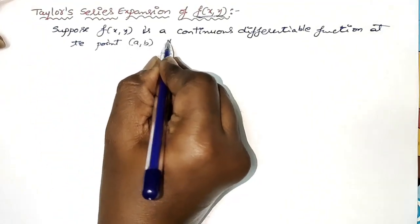So 1 by 1 factorial into (x minus 0) gives x into f_x at the origin, plus y into f_y at the origin, plus 1 by 2 factorial into x squared into f_xx at the origin, plus 2xy into f_xy at the origin, plus y squared into f_yy at the origin.